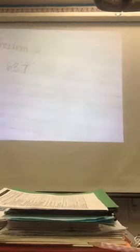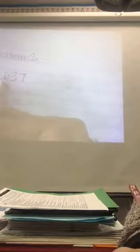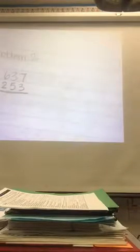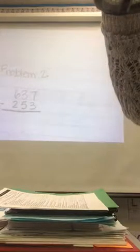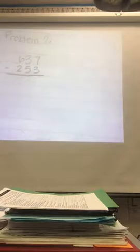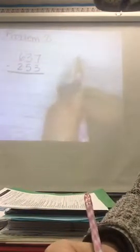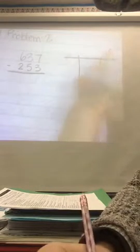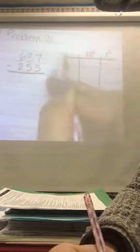I'd like to model the problem that you've been working on, 637 minus 253. I want you to think about how closely what you see me show you matches with what you thought and what you did on your own. So I've written a vertical equation, but of course I also want to have a chip model. So I'm going to make a place value chart showing my 1s, 10s, and 100s.